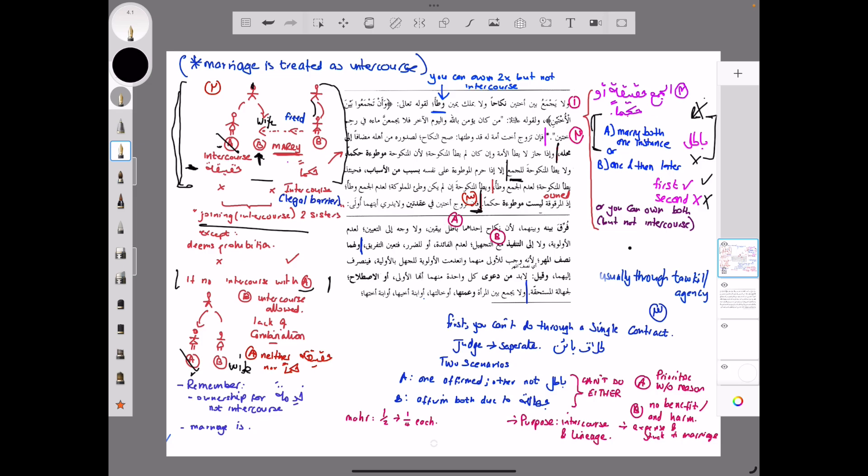Then there's nothing to be done because there was no intercourse in the first place. I hope this is very straightforward. If you have any questions, please do ask. Here's another scenario, very interesting. The shaykh says, so number three here: if he marries two sisters in two separate contracts.